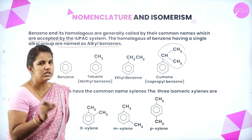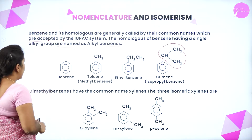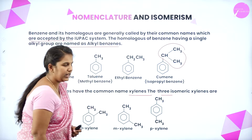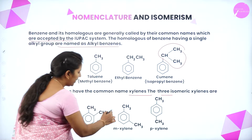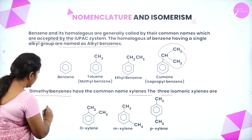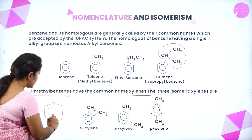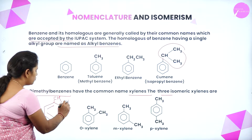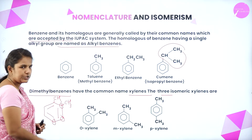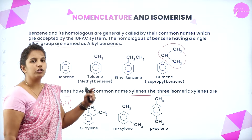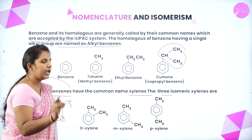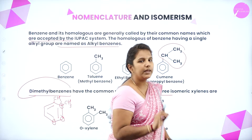Now let us look at isomers in aromatic hydrocarbons. Dimethyl benzene has a common name known as xylene, and there are three isomeric forms: ortho-xylene, meta-xylene, and para-xylene. Dimethyl benzene means a benzene ring with two methyl groups, which may be present at the ortho, meta, or para positions, giving three isomers.